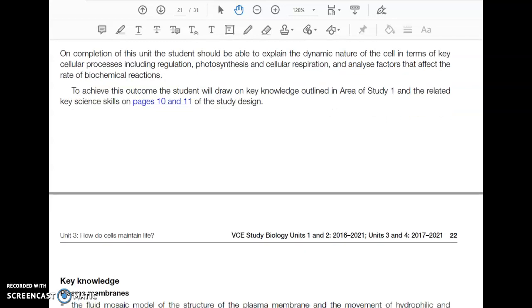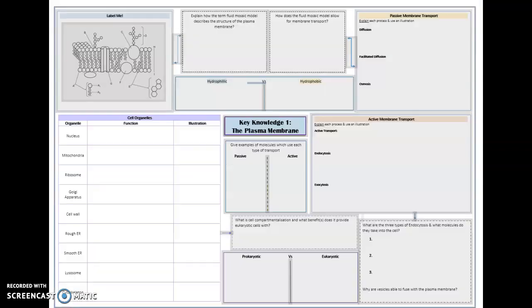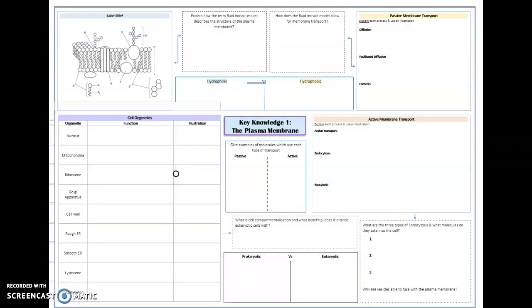The first key knowledge is plasma membranes. We need to make sure that we know the fluid mosaic model of the structure of the plasma membrane and the movement of hydrophilic and hydrophobic substances across it, based on their size and polarity. We have to know different organelles, including ribosomes, endoplasmic reticulum, Golgi apparatus, and associated vesicles in export of protein produced from cells through exocytosis. And then finally, we need to know cellular engulfment of material by endocytosis. We are going to use this word document to help us. So let's begin.